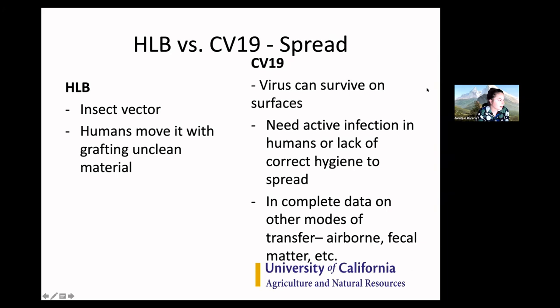With HLB, we have this insect vector, and we know that is how it's moving around generally speaking. The other way it's moving around is humans — they can carry the vector with them, moving a plant that has psyllids on it. A more risky thing is that a human is actually grafting with unclean material, and when you graft with unclean material, that's the sure way of knowing that plant is going to have HLB. That's actually how they get HLB plants in research — they just graft the disease into the plant.